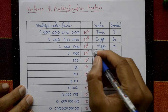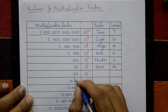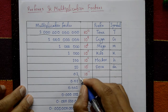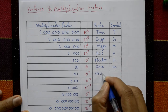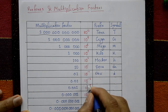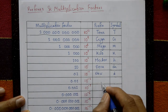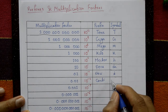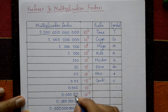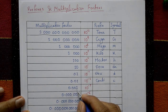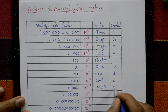Now these powers are positive; the remaining ones are negative. 10 to the minus 1 means 0.1 — this is deci, symbol is D. 10 to the minus 2 is 0.01 — the prefix is centi, symbol is small c. 10 to the minus 3 is 0.001 — it's milli, and the symbol is small m.